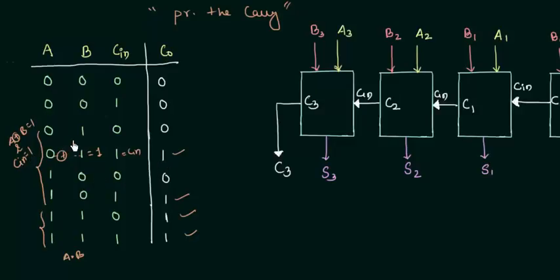Because in this case also A XOR B is 1 but Cin is 0 so output is 0. In this case A XOR B is 1, you can say that in all these 4 cases A XOR B is 1. So it depends upon the Cin whether it is 1 or not.